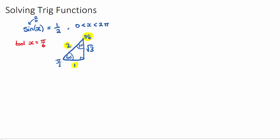This means that we're going to have multiple answers within our given domain. So with our tool angle, I know that all of my angles will be pi on 6 — they will have some sort of link to pi on 6; it'll be pi on 6 away from the x-axis — and I'll show you what that means.